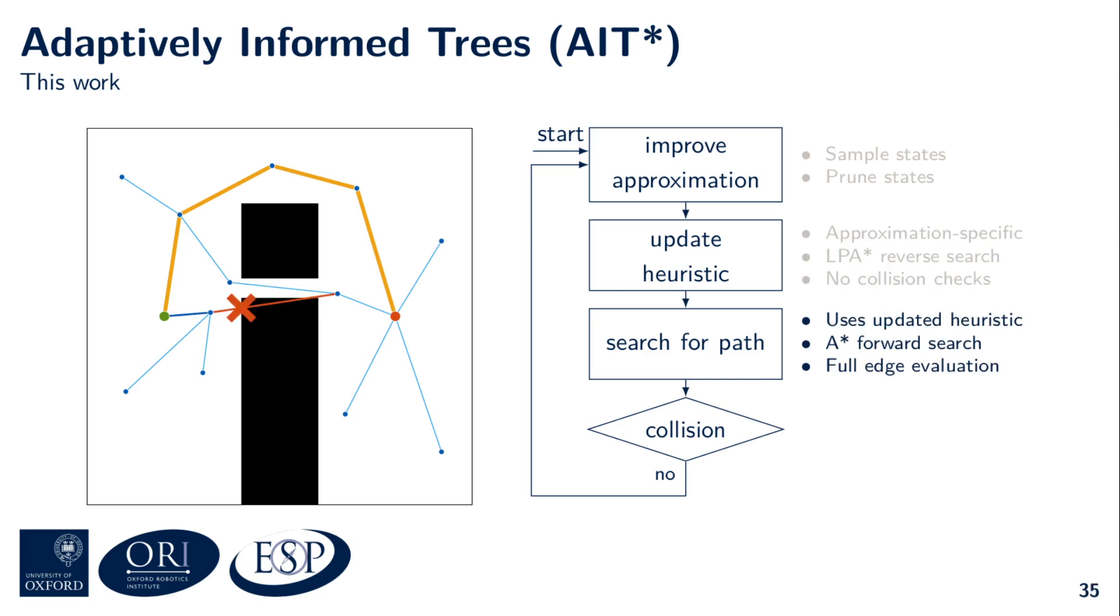This time, the forward search detected a collision. Since this collision is in the reverse search tree, it indicates that the heuristic is flawed. Because the reverse search is computationally inexpensive, AIT* updates this heuristic before it continues to search for a path with the expensive forward search. This update can be done efficiently because LPA* is an incremental algorithm.